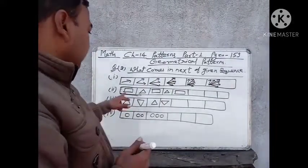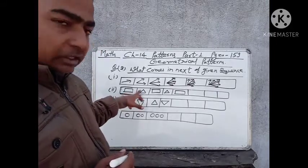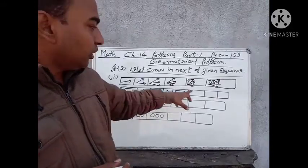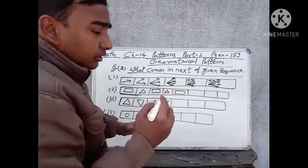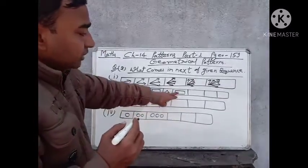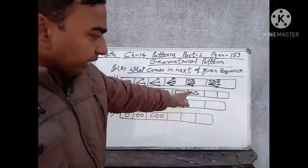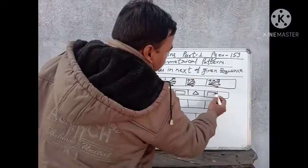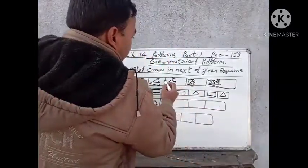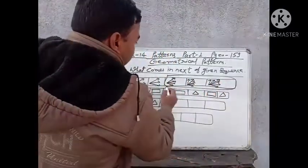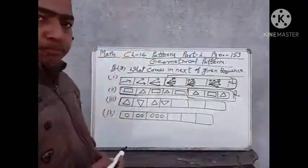Now come to the second question. Second question is a figure of rectangle, triangle, rectangle, triangle, rectangle again. What will be the next one? Next one will come after triangle, after rectangle, triangle. So we will draw triangle, next one will be rectangle again, and the last one will be triangle. This is our answer.